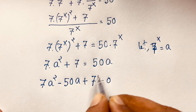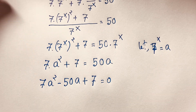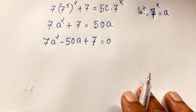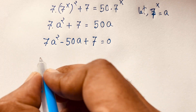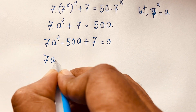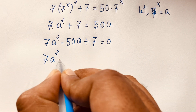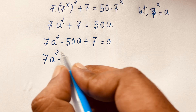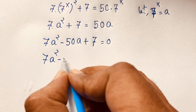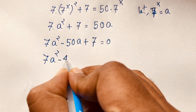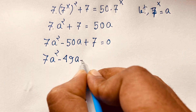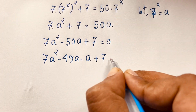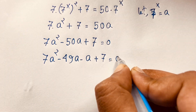Now I factor this expression. We split the middle term: 7 times 7 is 49, so 50a becomes 49a plus a. This gives us 7a² minus 49a minus a plus 7 equals 0.